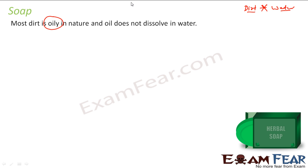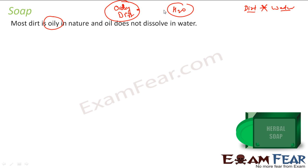So we need something which can stick to oily dirt. I have my oily dirt, I have water, and they don't dissolve — they don't interact with each other. So I need something which sticks to the dirt and also sticks to the water. There has to be a medium between these two, and this medium is called soap. Water can't be used to remove all the dirt, so there has to be a medium between water and dirt, and soap is that medium.